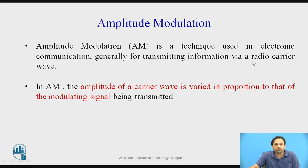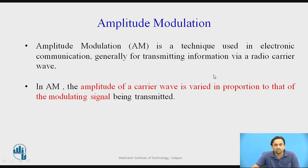Before starting amplitude modulation, let us recall what modulation means. Modulation is changing the characteristics of a carrier wave with respect to a modulating signal. The characteristics we can change are amplitude, frequency, or phase. If we change the amplitude of a carrier signal in proportion to the modulating signal, that is known as amplitude modulation, keeping frequency and phase constant throughout.